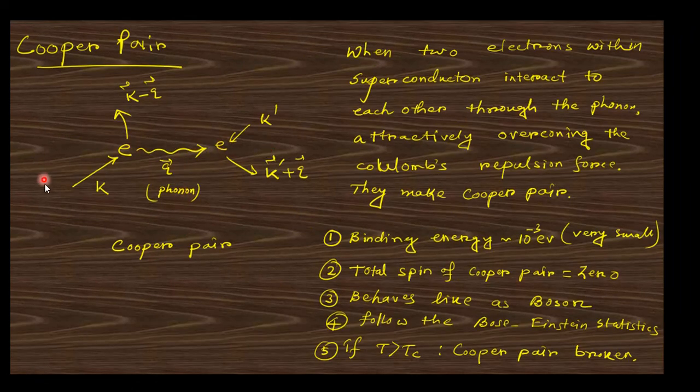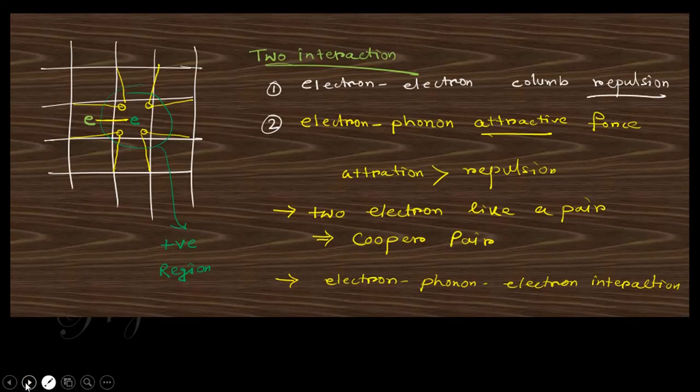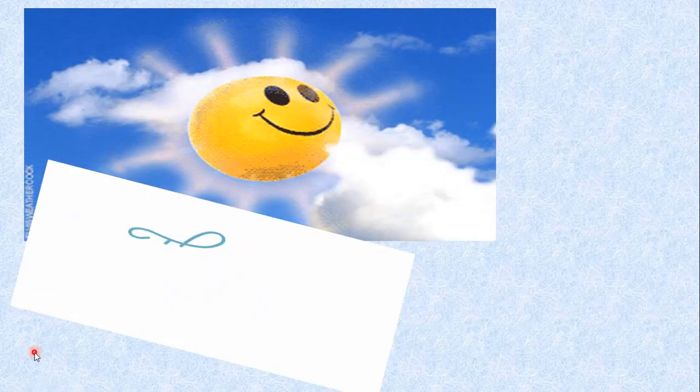This electron-electron Cooper pair gives you the phonon. Actually, when two electrons in a superconductor interact with each other through the phonon attractively, overcoming the Coulomb repulsive force, they overcome the Coulomb repulsive force. With this attraction, they make a Cooper pair. Binding energy is like that. Total spin of Cooper pair is zero. It behaves like a boson, follows the Bose-Einstein statistics. If T is greater than Tc, the superconducting state breaks. These all happen below the critical temperature, that is the superconducting state. Above the critical temperature, this breaks. This is actually the BCS theory. So I think it's clear about all these things. If there is any doubt, you must comment in the comment box. This is all about me, this is my contact detail, this is my YouTube channel. So take care, see you in the next video. Thank you.